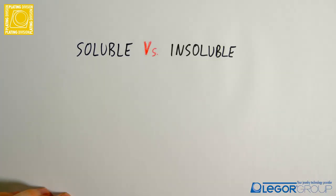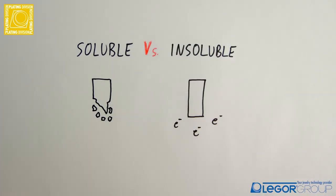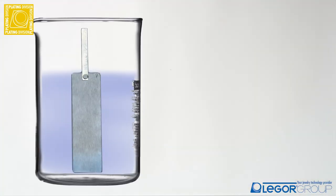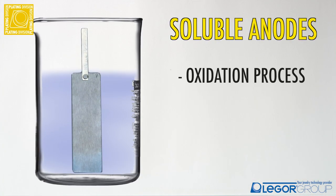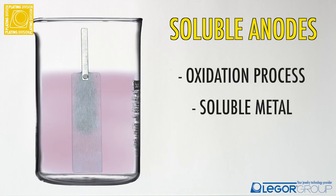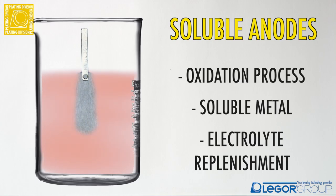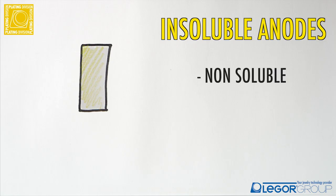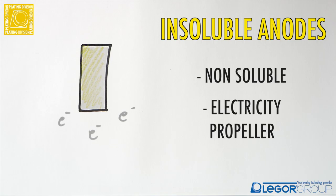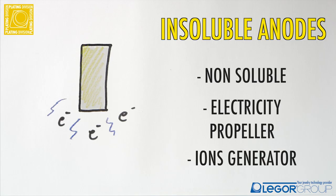Anodes can be divided into two categories: soluble and insoluble. Soluble anodes react in the system in a process called oxidation. In this reaction, they are slowly dissolved into the plating solution over time and replenish the metal which is being deposited. On the other hand, insoluble anodes are not subject to this oxidation cycle and they just act as a conductive source of electricity, propelling the metal in the solution to the substrate to be plated.